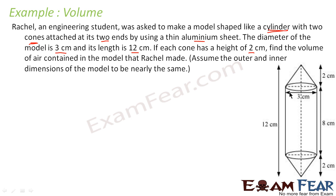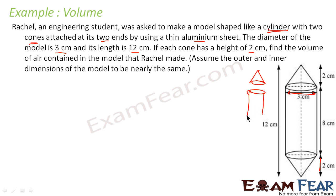The diameter of the model is 3 cm and the length is 12 cm. The height of each cone is 2 cm, so there are 2 cm on this side and 2 cm on the other side, making 4 cm total for both cones. Total length is 12, so 12 minus 4 is 8. This length of the cylinder is 8 cm. Breaking this figure, it consists of one cone, one cylinder, and one more cone.